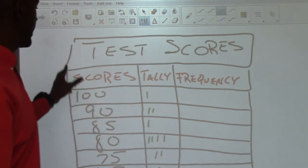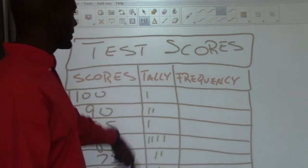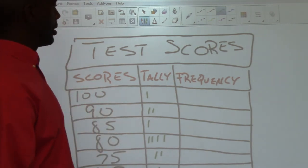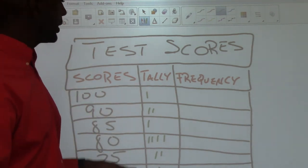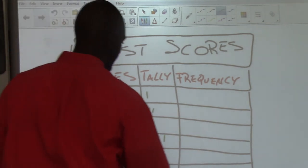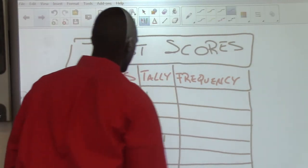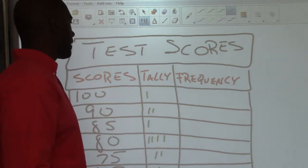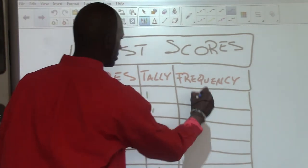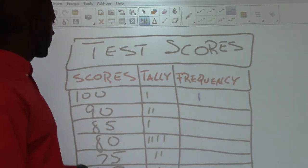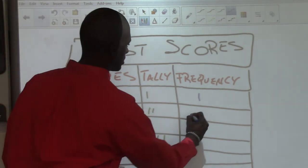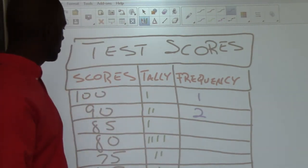Now we've created the table with our scores and tally marks, and we want to fill in the frequency column. All we have to do is count the tally marks and write down the number — that gives us how frequent each score is. For 100, we have one tally mark, so the frequency is one. For 90, we have two tally marks, so the frequency is two.